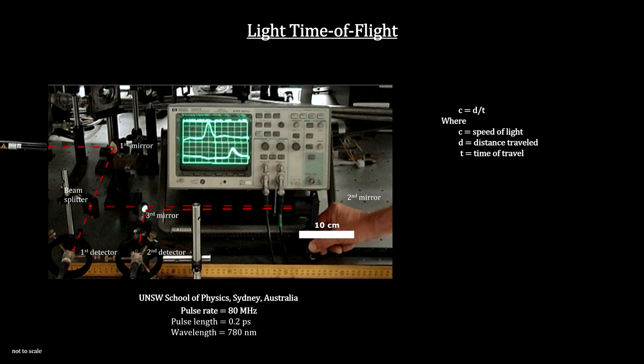Now we move the second mirror ten centimeters to the left. Because the beam has an out and back path, this reduces the path length by twenty centimeters.